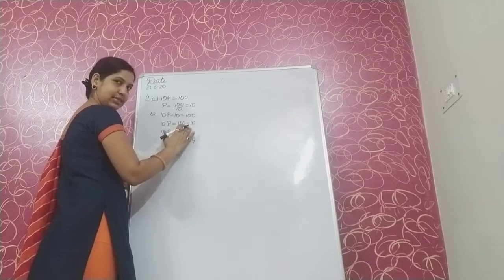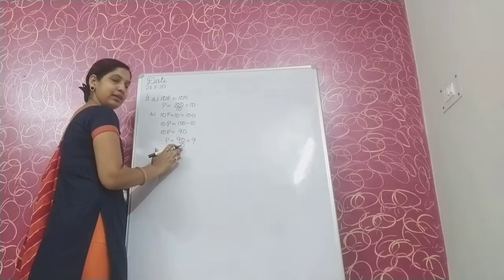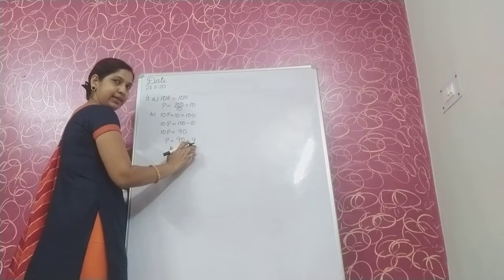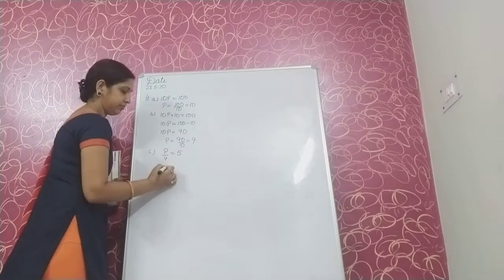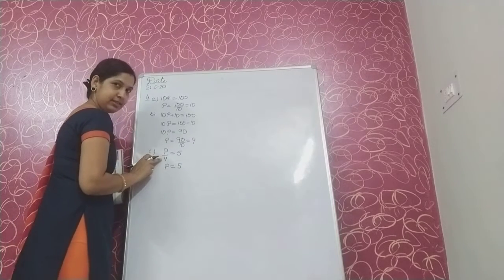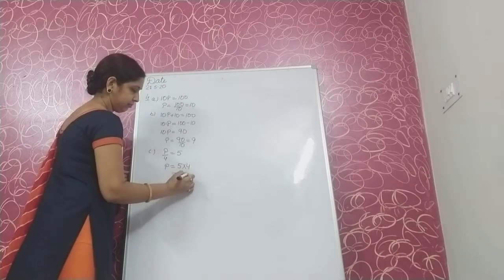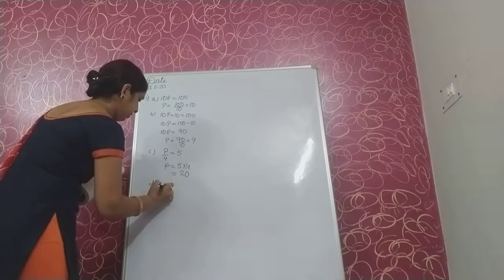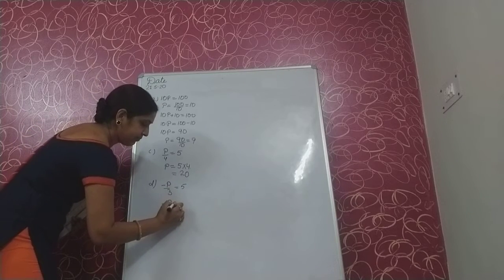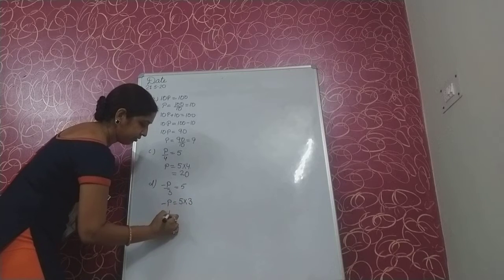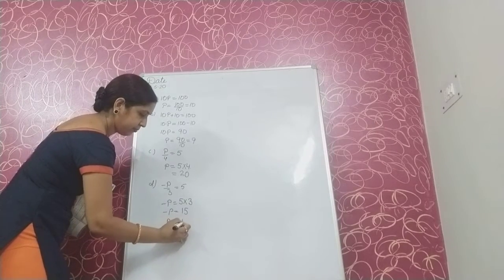First plus 10 was transposed, it became minus 10. 100 minus 10 is 90. Then 10 multiplying P was transposed to the other side to divide. So 90 upon 10 is 9. Next, P upon 4 is equal to 5. 4 is dividing here, so when we transpose it, P gets multiplied by 5. Next, minus P upon 3 is equal to 5. So minus P is 5 into 3, that is 15. If minus P is 15, then P is equal to minus 15.